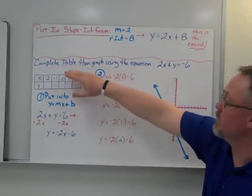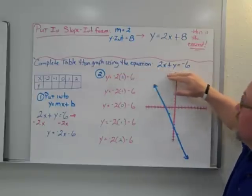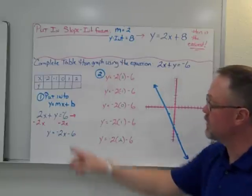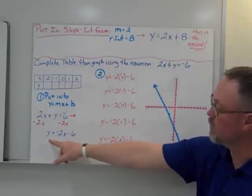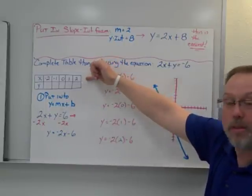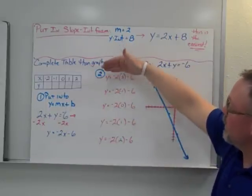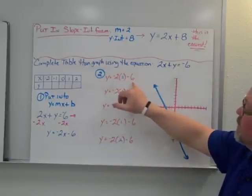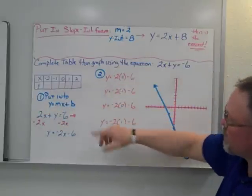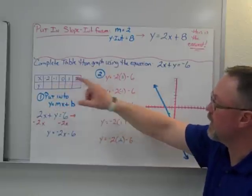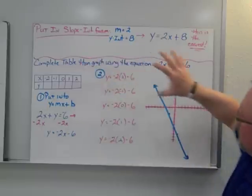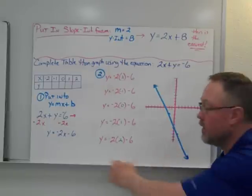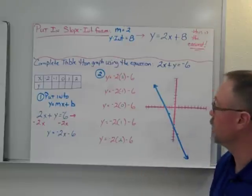One of the last things is completing a table using an equation given in standard form. The first step is reorganizing it into slope-intercept form — moving the negative 2x over and dividing gives us our equation. Then we plug in x values and work out the results: you end up with a pattern of negative 2, negative 4, negative 6, negative 8, negative 10 for your y answers. You then take this table and plot it on a graph — the line goes downhill, which corresponds to a negative slope, which is a good way to check your work.